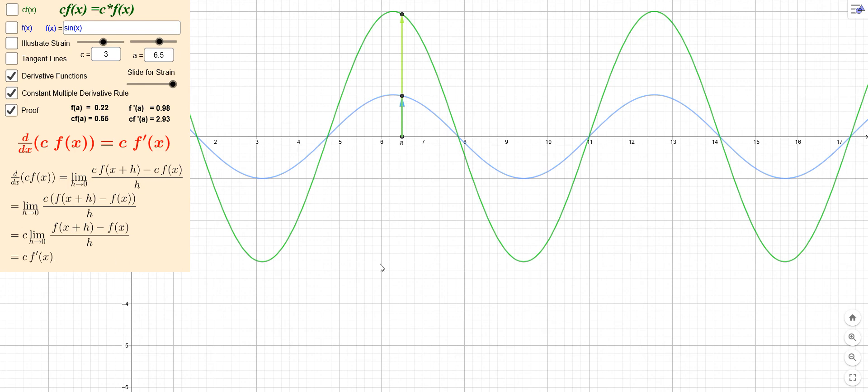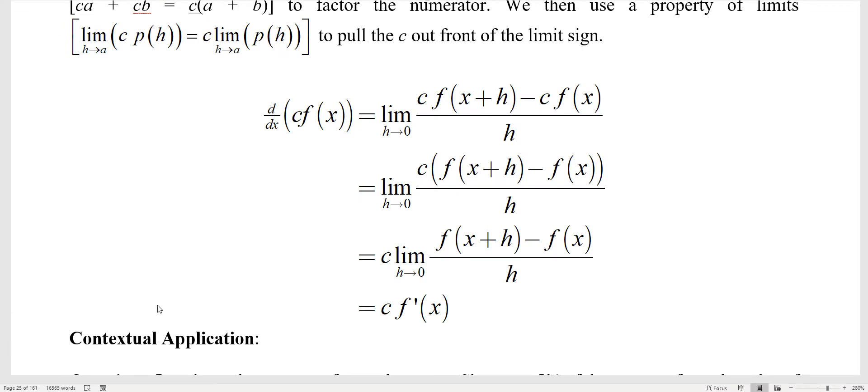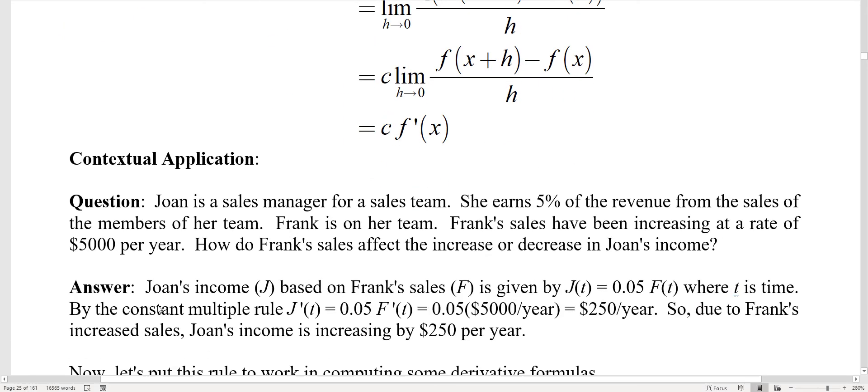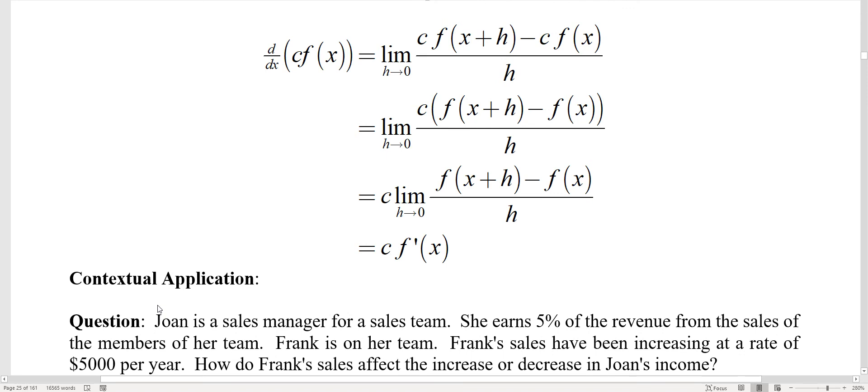And so that is the constant multiple rule - and there you can see the proof written out a little bit bigger. Now here's a contextual example of this: Joan is a sales manager for a sales team. She earns 5% of the revenue from the sales of the members of her team. Now Frank is on her team. Frank's sales have been increasing at a rate of $5,000 per year. How do Frank's sales affect the increase or decrease in Joan's income? I'll give you a second to figure that out and come back - pause if you need to.